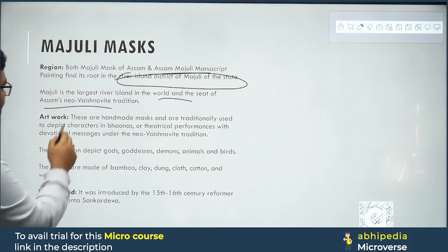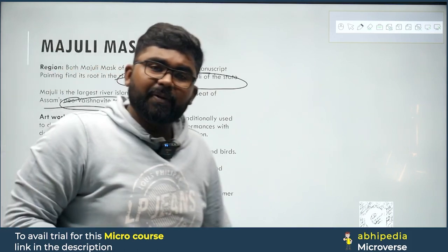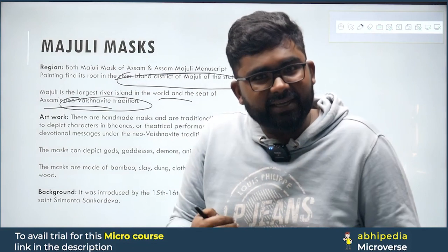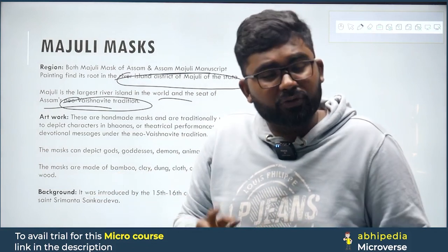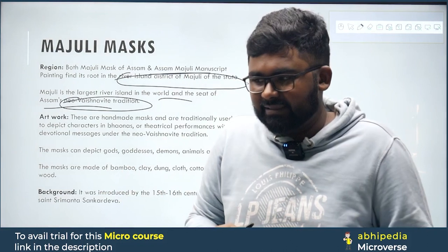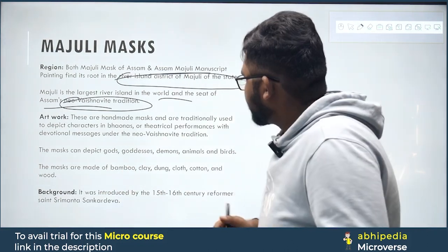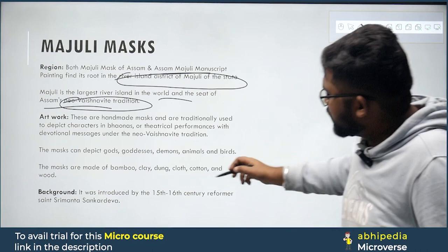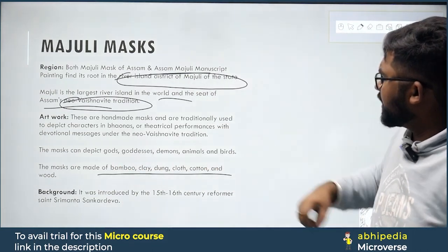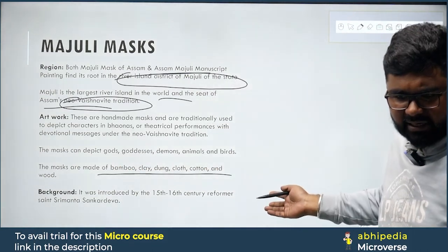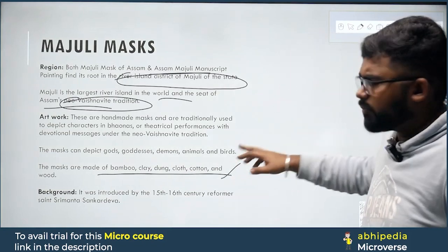The Majuli Mask is rooted in Assam's Neo-Vaishnavite tradition, where you have the personalization of Vishnu and Krishna — hence it is called Neo-Vaishnavism. These masks are made from bamboo, clay, dung, and cloth, among other materials.